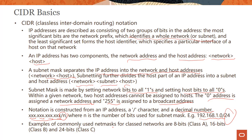Examples of commonly used subnet masks: Class A networks have the first octet all ones (/8), Class B networks have the first two octets all ones (/16), and Class C networks have the first three octets all ones (/24). We'll look into a Class C network and further divide it into a subnetwork.